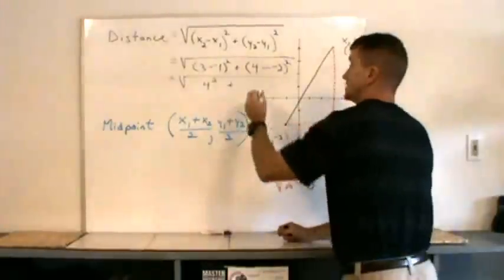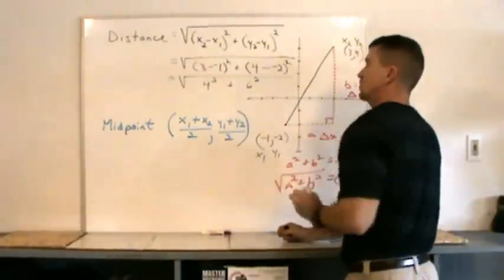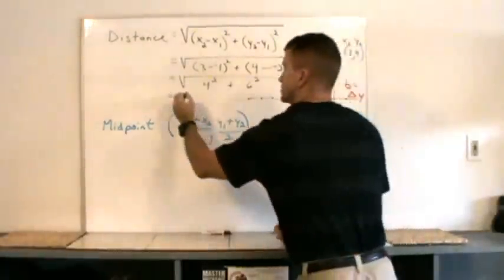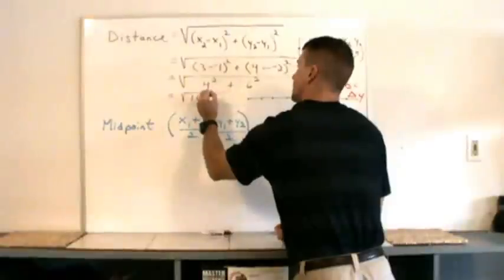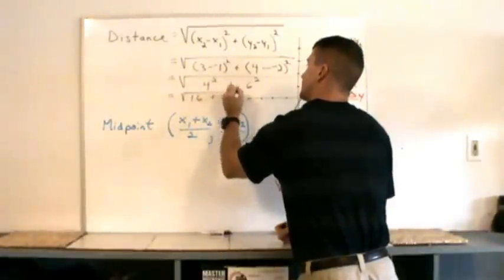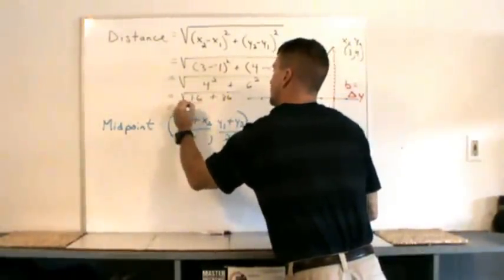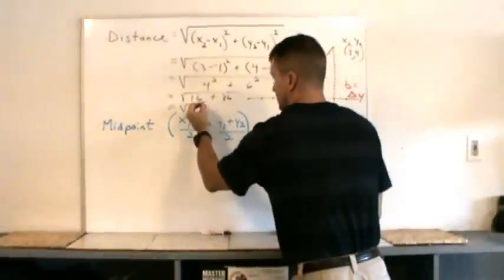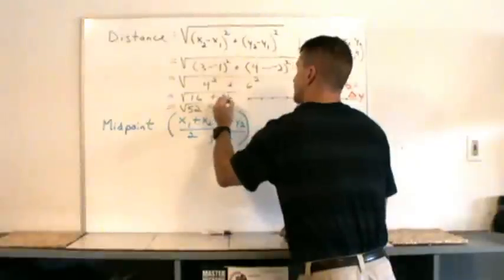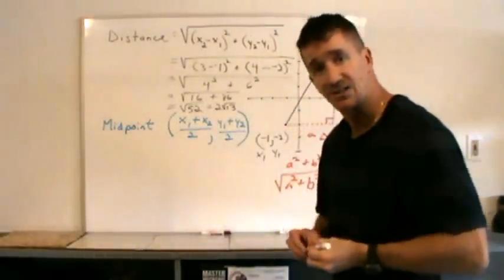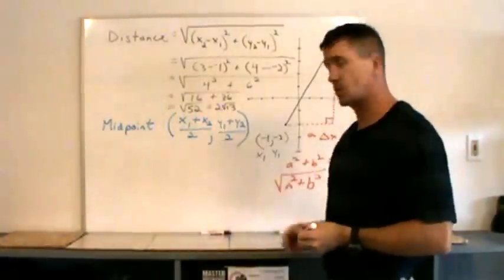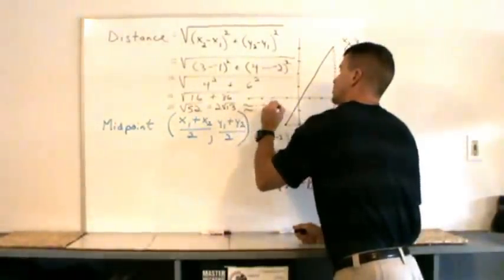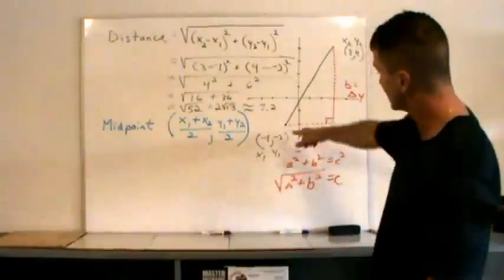Four minus negative two is positive six, and we'll square it. So that's the square root of 16 plus 36, which is the square root of 52. If you want to simplify that radical, that's two square root of 13. If you want to approximate it, the square root of 49 is a perfect seven, so the square root of 52 is a little bit more than seven — roughly about 7.2 or so. That's the distance between those two points.